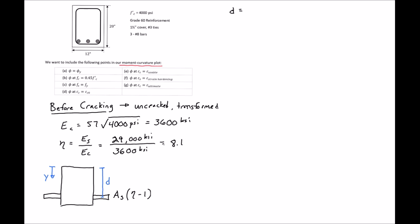The depth of our steel is the overall depth of 20 inches minus our cover of 1.5 inches, minus the diameter of our ties which are 3/8 inch, and then minus half the diameter of our reinforcement — one half times 1 inch — giving us a depth d of 17.6 inches.